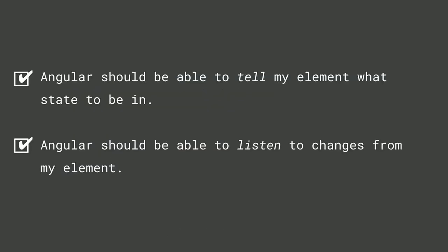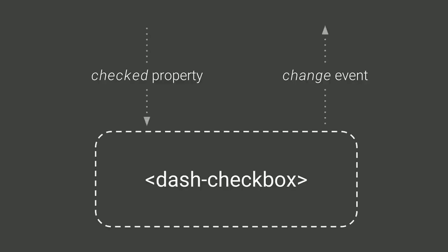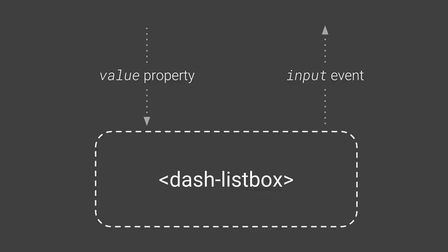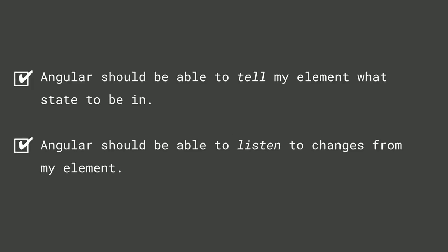Angular can now tell my component what state to be in and listen for changes from it. We have properties and attributes going in, and events coming out. For the list box control, I did basically the exact same thing — I defined a value property and fire an input event, making it more like a generic input control. With these two items satisfied, our custom elements should work well pretty much anywhere.